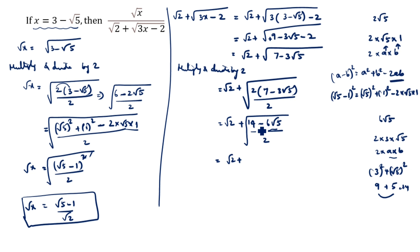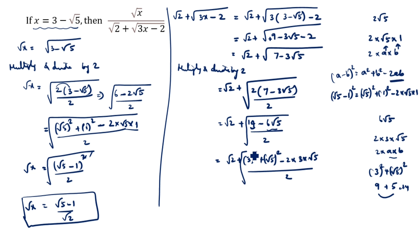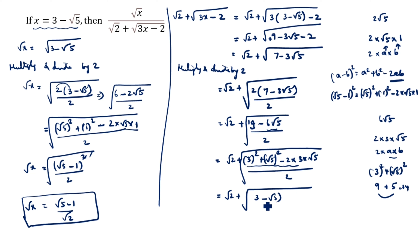So we split 14 minus 6√5 as 3² plus (√5)² minus 2·3·√5, divided by 2 under the root. This equals (3 minus √5)², so the square and root cancel. Therefore √2 plus √(3x minus 2) equals √2 plus (3 minus √5).